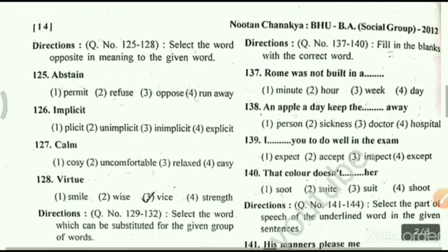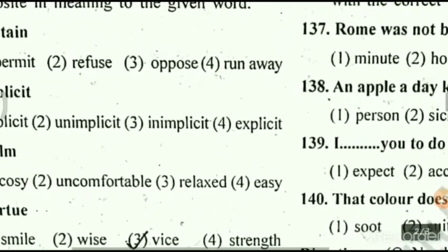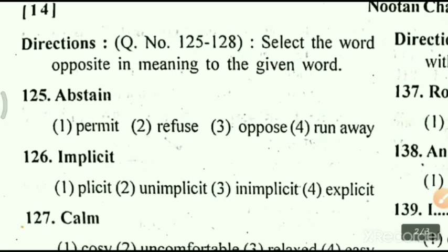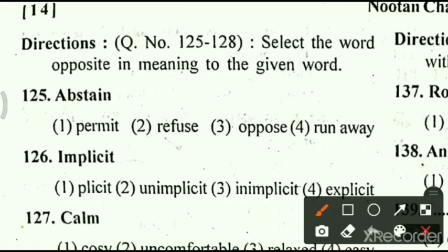From question number 125 to 128, we have to select the word opposite in meaning to the given word. Question number 125 is: abstain. Our options are: option number 1, permit; option number 2, refuse; option number 3, oppose; option number 4, run away. Answer for this question is option number 1, permit.